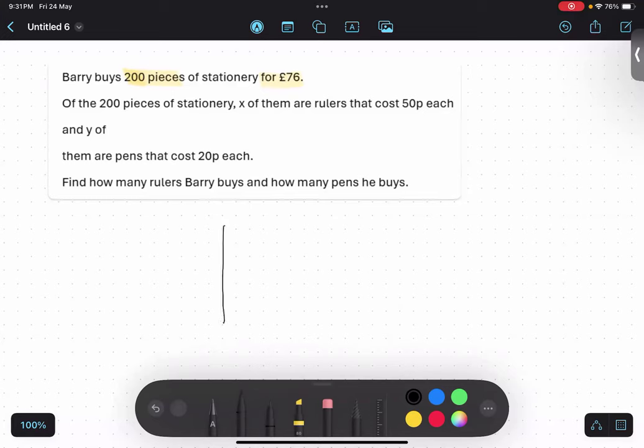So there are two things happening. You are buying certain things. Of the 200 pieces of stationery, x of them are rulers that cost 50 pesa each and y of them are pens that cost 20 pesa each.